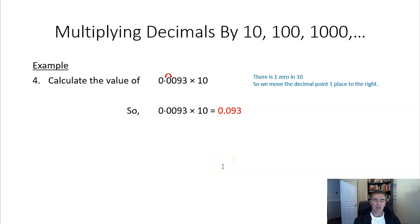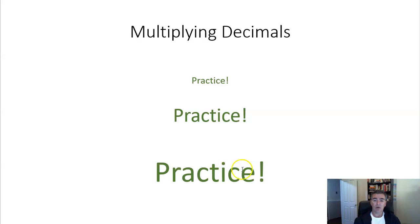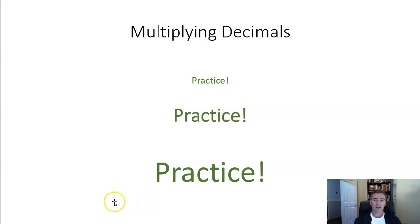So now that I've shown you how to multiply by 10, 100, and 1000, what you now need to do is practice, and practice some more, and then practice some more. The more that you do that, the easier it will become. I hope you found this useful, and the more that you practice it, the better you will become. Thank you.